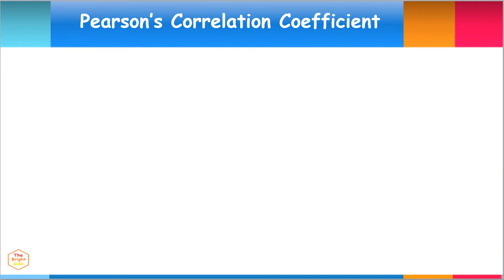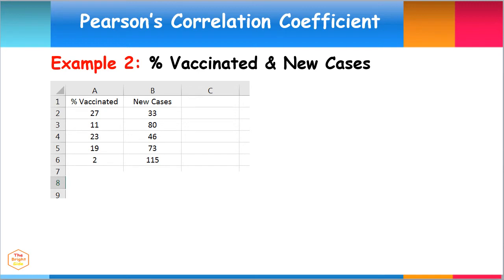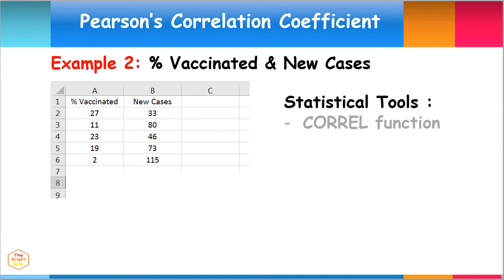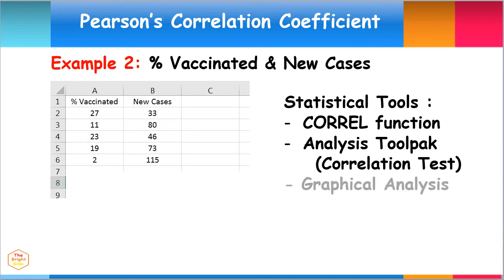For our next example, we would like to determine the relationship between percent of residents vaccinated in an area and new cases of positive viral infection. Again, we can use the CORREL function or the Analysis Tool Pack correlation test in Excel to find the correlation coefficient between the two variables. We can also use a graph to verify our conclusion from the data analysis.